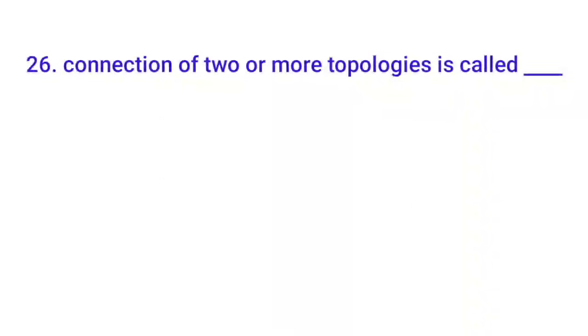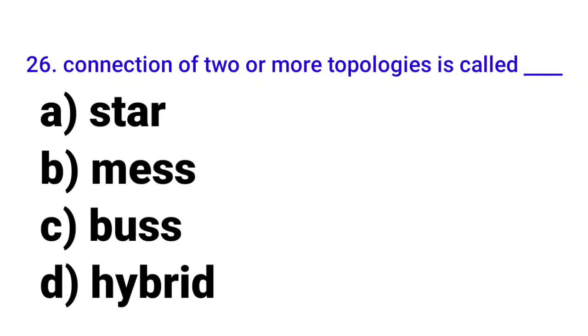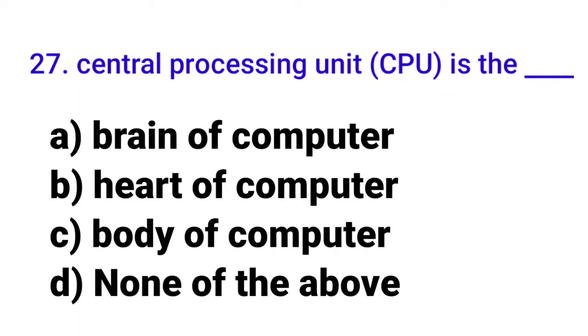Twenty-sixth MCQ: 'The connection of two or more topologies is called?' The answer is option D: hybrid. Twenty-seventh MCQ: 'CPU is dash?' The answer is option A: brain of computer. Twenty-eighth MCQ: 'Who invented the World Wide Web?' The answer is option C: Tim Berners-Lee.